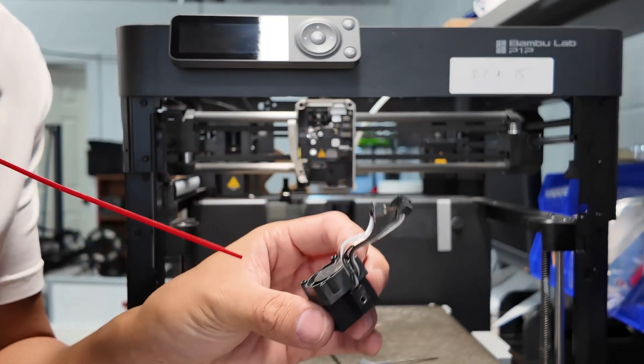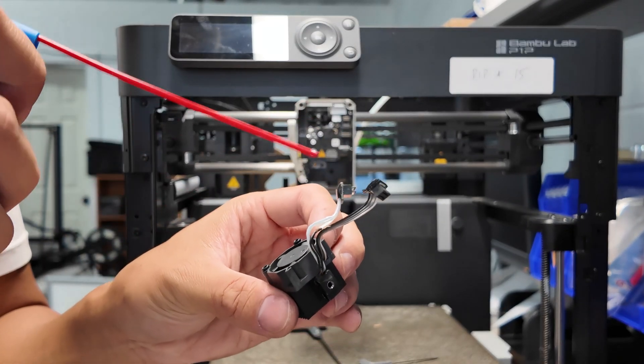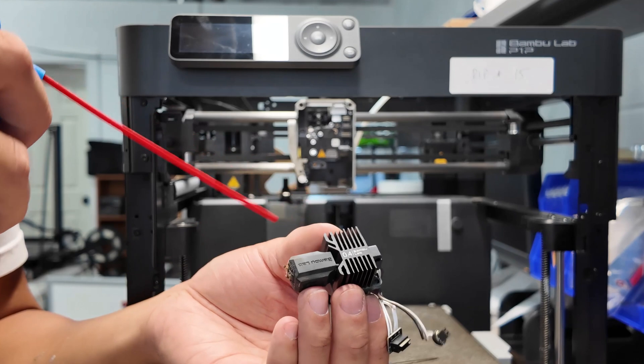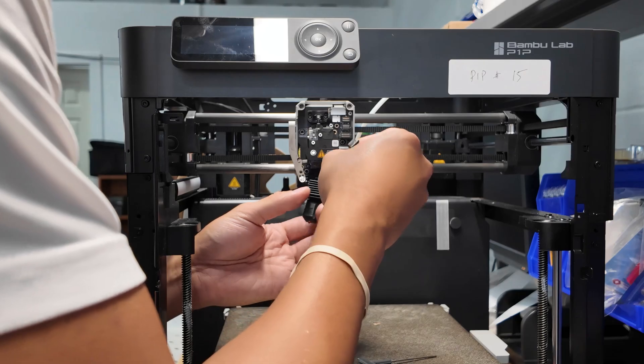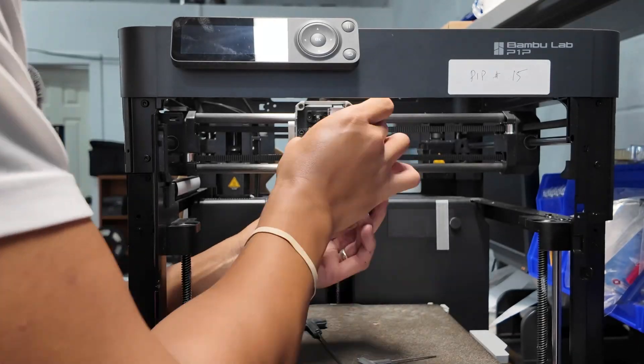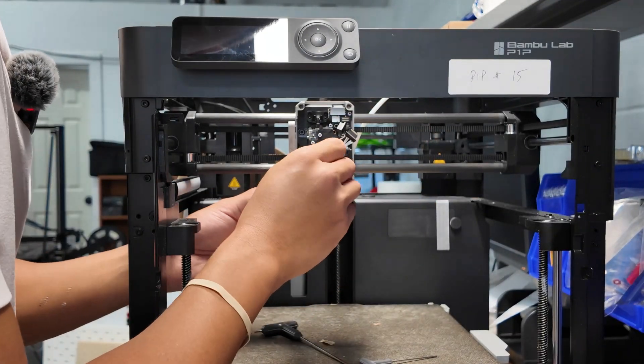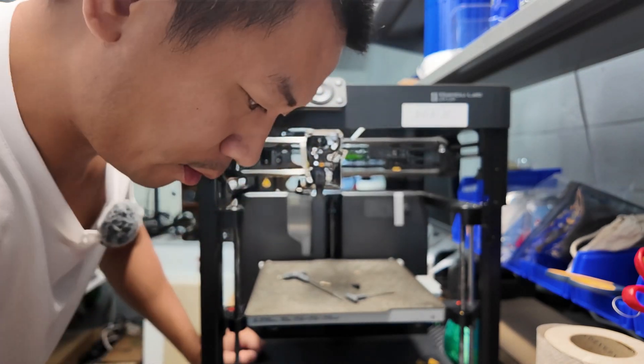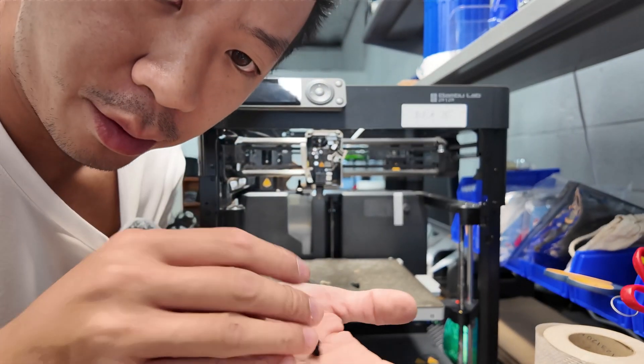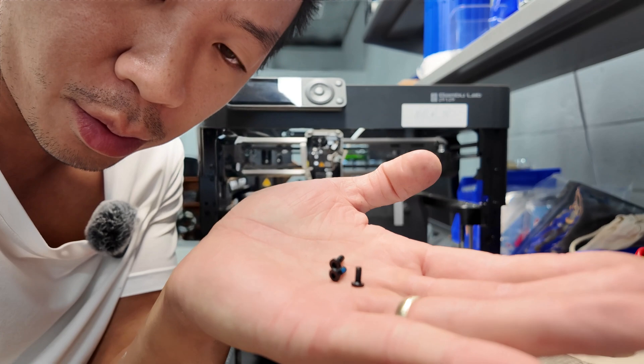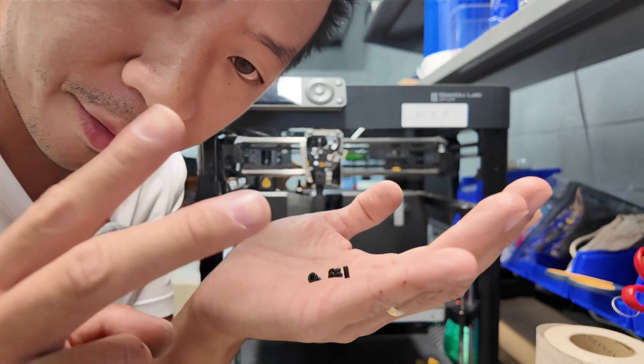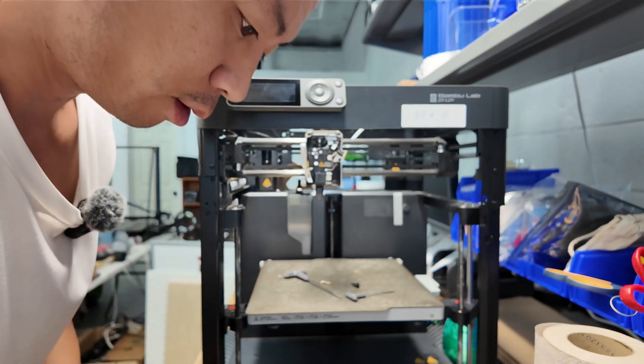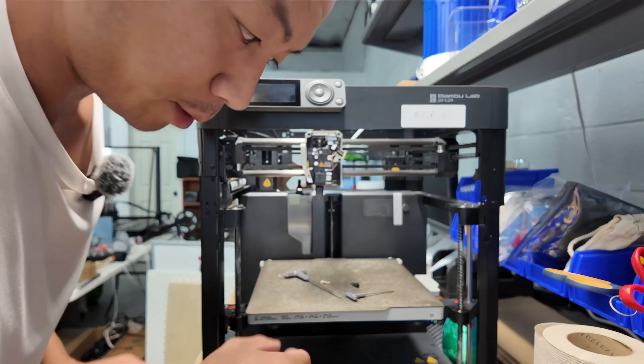I'll also take some compressed air and just clean this out a little bit. And then you just slide this guy right back in. Yeah, I'm an idiot. And there's four screws here that I didn't use to screw back the two halves of the extruder.